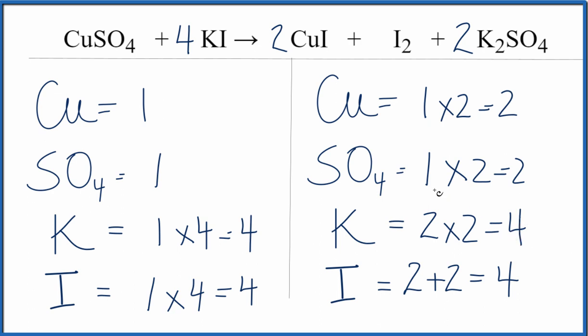And in fact, if we put a coefficient of two here, the sulfates, one times two, that equals two. Those are balanced. The coppers, one times two. That gives us two. And we've balanced this equation.